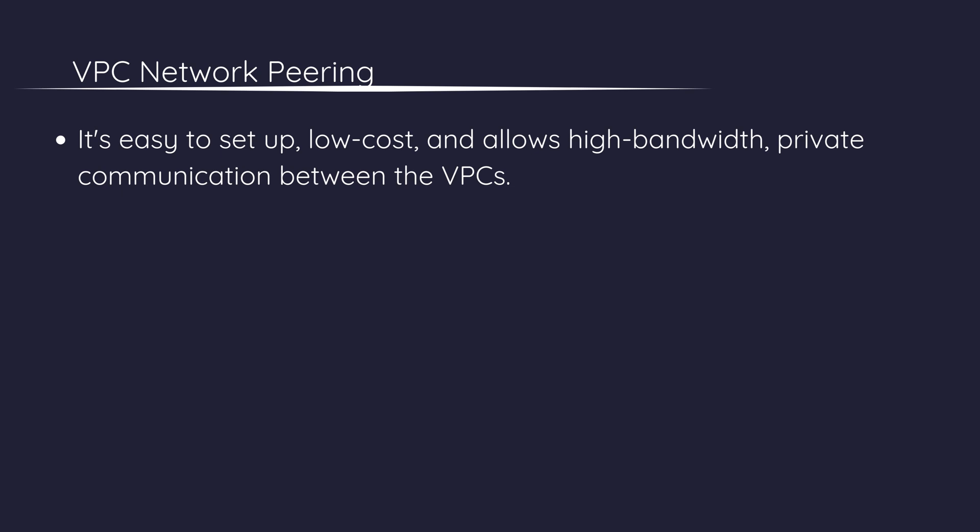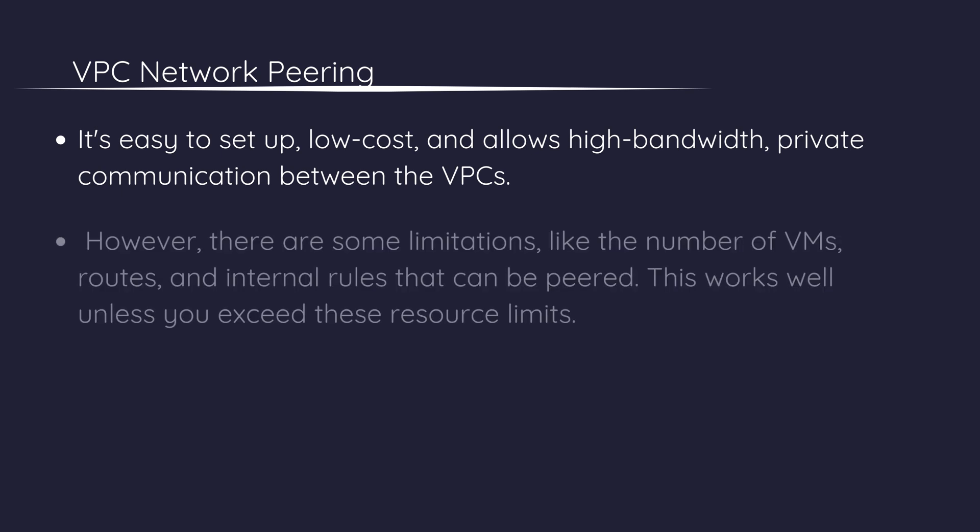VPC network peering is easy to set up, low cost, and allows high bandwidth private communication between the VPCs. However, there are some limitations, like the number of VMs, routes, and internal rules that can be peered. This works well unless you exceed these resource limits.